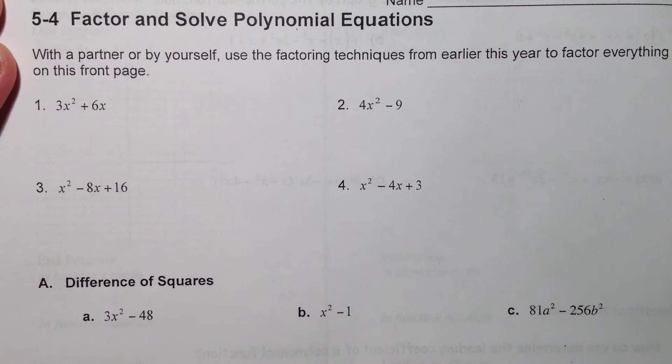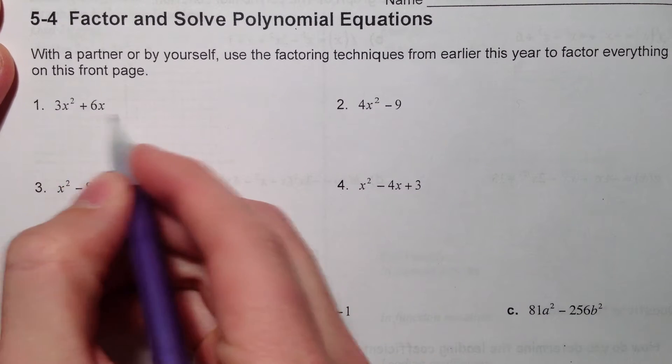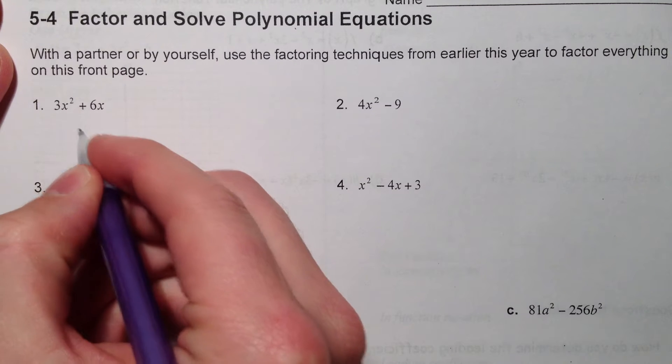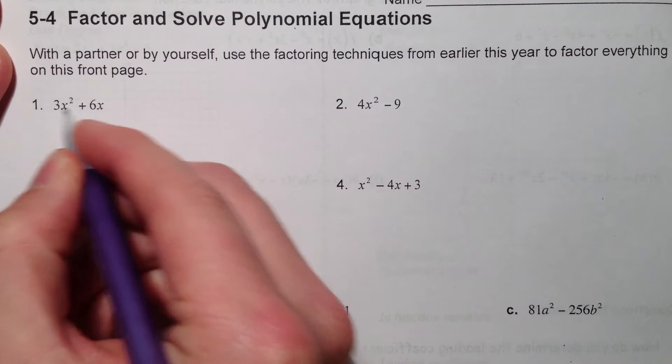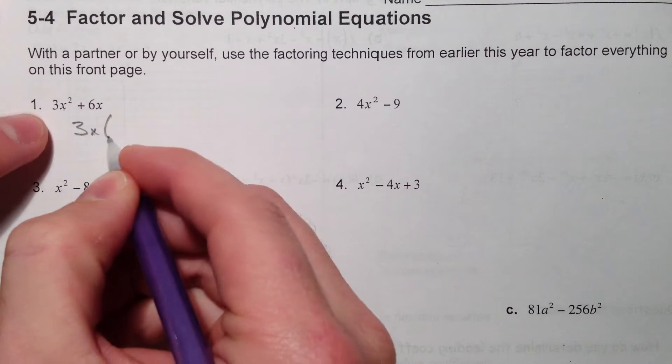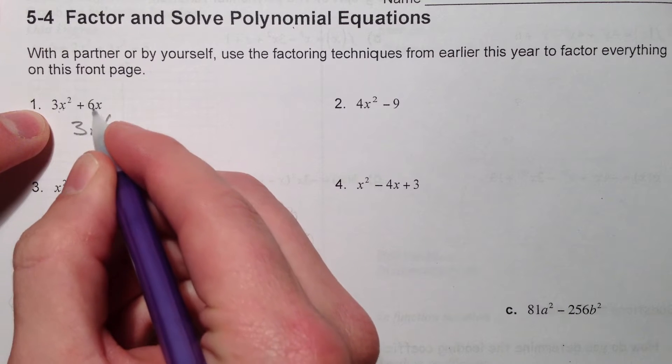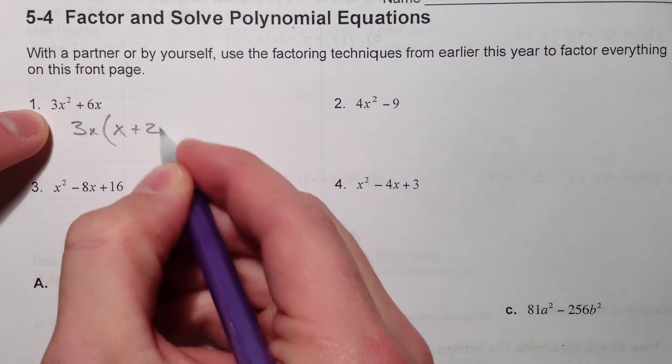So the first couple, the first page is going to be review. The first kind of factoring you ever learned about was when you could take one thing - a 3 and a 6 have a 3 in common, and an x² and an x have an x in common, and you can factor that out. That leaves 1x, and 6x divided by 3x is just 2.